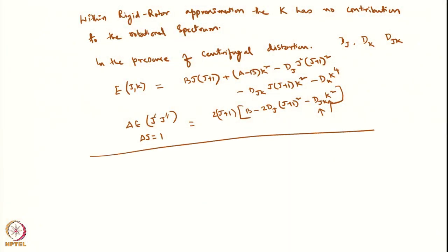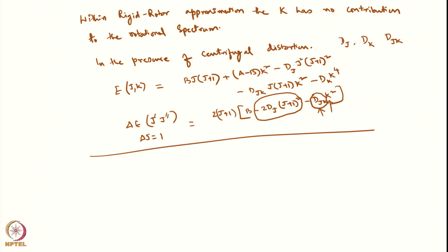We can now see that this will depend on the value of K and the centrifugal distortion constant DJK. Only when you have centrifugal distortion — when the molecule is no longer a rigid rotor — will you start seeing the effects of K. The lines come closer together, and as K keeps increasing, the rotational levels become more and more closely spaced, since the term goes as K².